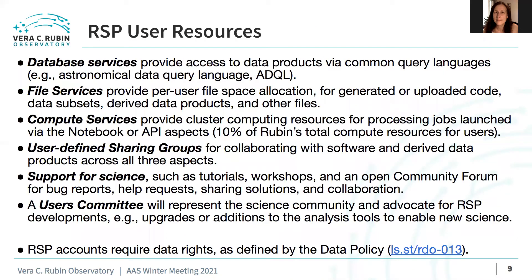Rubin Observatory will provide a variety of user resources related to the Rubin Science Platform. Database services enable the catalogs to be queried in common languages such as the Astronomical Data Query Language, ADQL. Although it will not be possible to download all of the LSST data, relatively small subsets of the catalogs can certainly be downloaded for local processing. The RSP's file services will provide disk space for users to save uploaded code, derived data products, and their documentation. Compute services will provide processing resources for jobs launched via the notebook or API aspects, with 10% of Rubin Observatory's total computing resources available for users. Within the RSP, users will be able to define working groups with other users, within which software and derived data products can be shared across all three aspects.